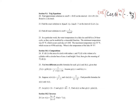We end up getting theta on the left-hand side and cosine inverse of negative 0.43. We need to make sure our calculator is in radians because the interval is in radians. Plugging this into our calculator, we get cosine inverse of negative 0.43 is 2.015. It says round to two decimal places, so I'll round that up to 2.02.